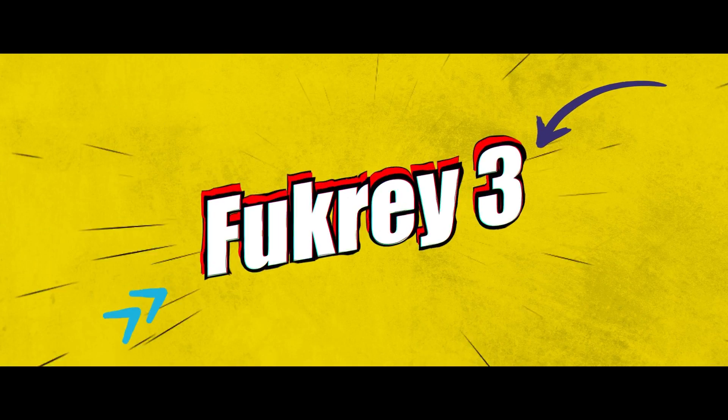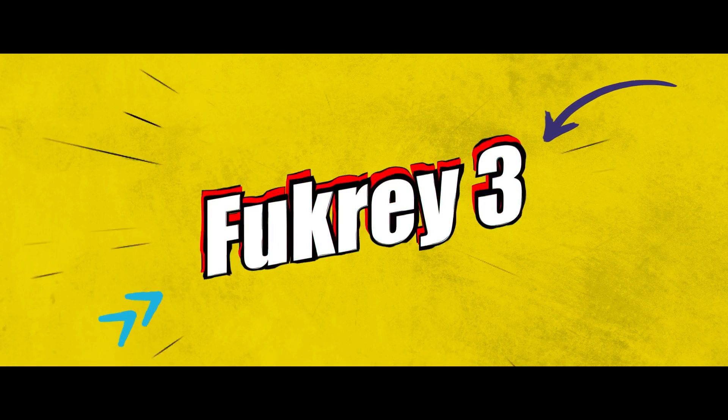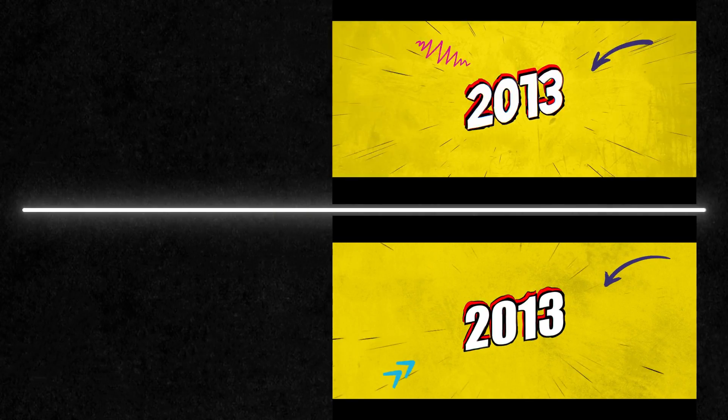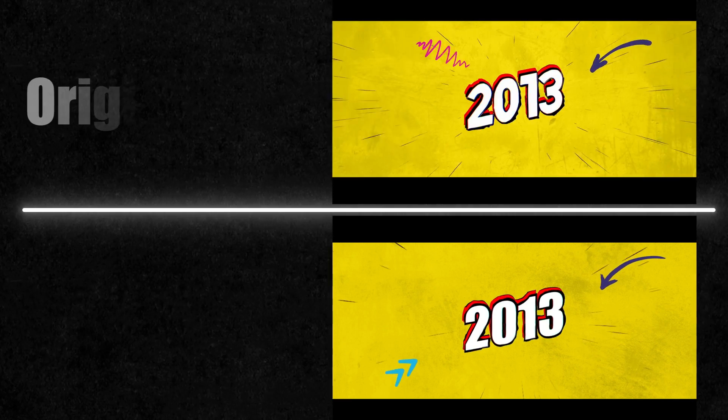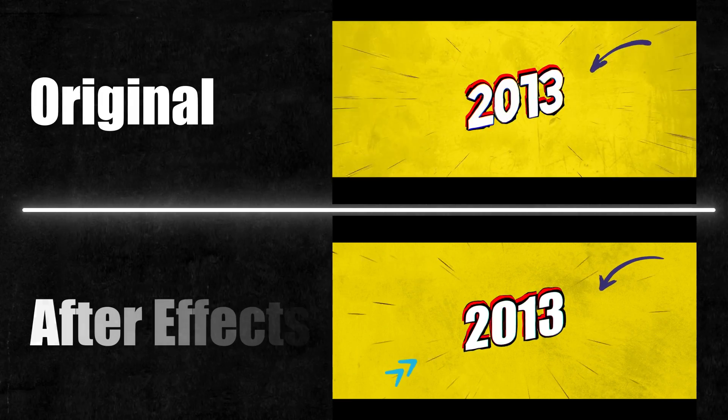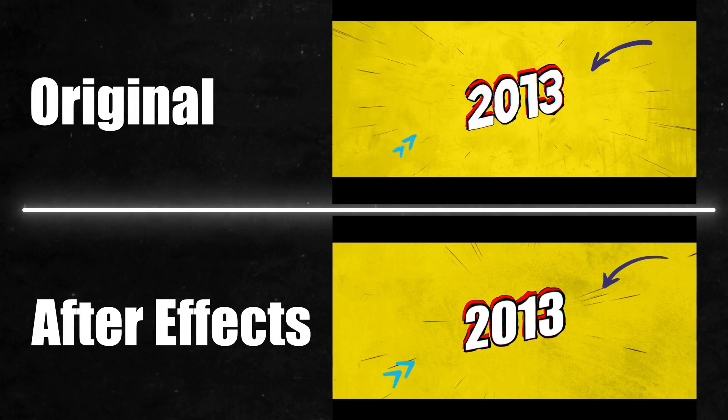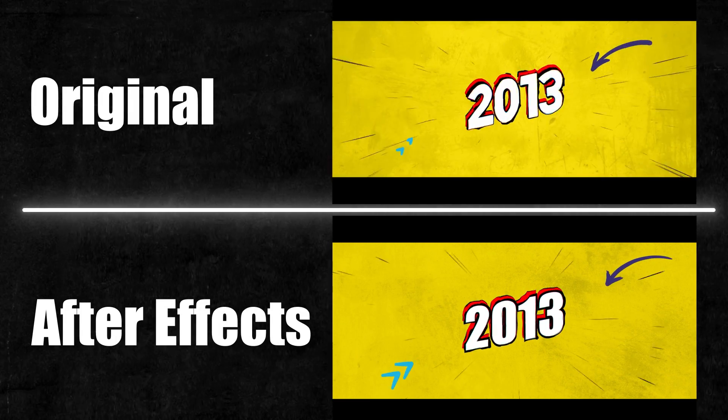In this video, we will recreate this text animation from the trailer of Fukre 3. Here is a side-by-side comparison between the original one and the one we are going to create inside Adobe After Effects. It's almost the same.